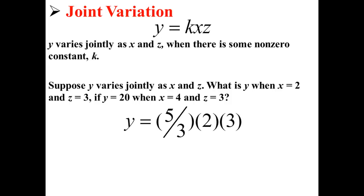Now that we know that k is 5 over 3, we can use it to solve for y when x is 2 and z is 3. So y equals 5 over 3 times 2 times 3 or simply 10.